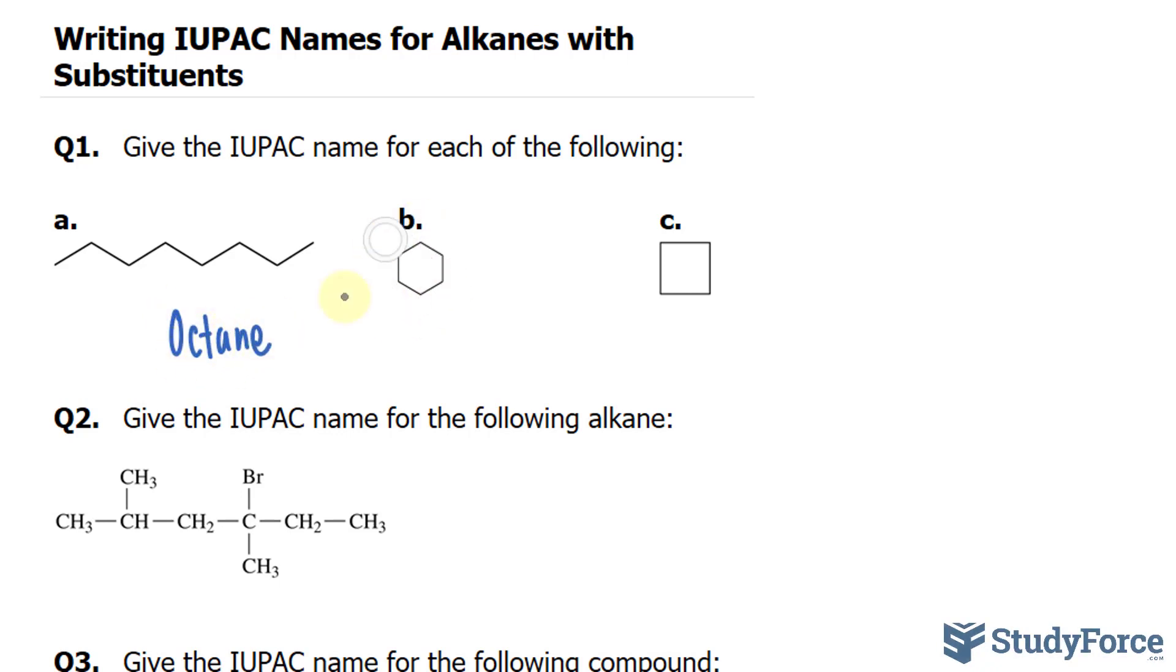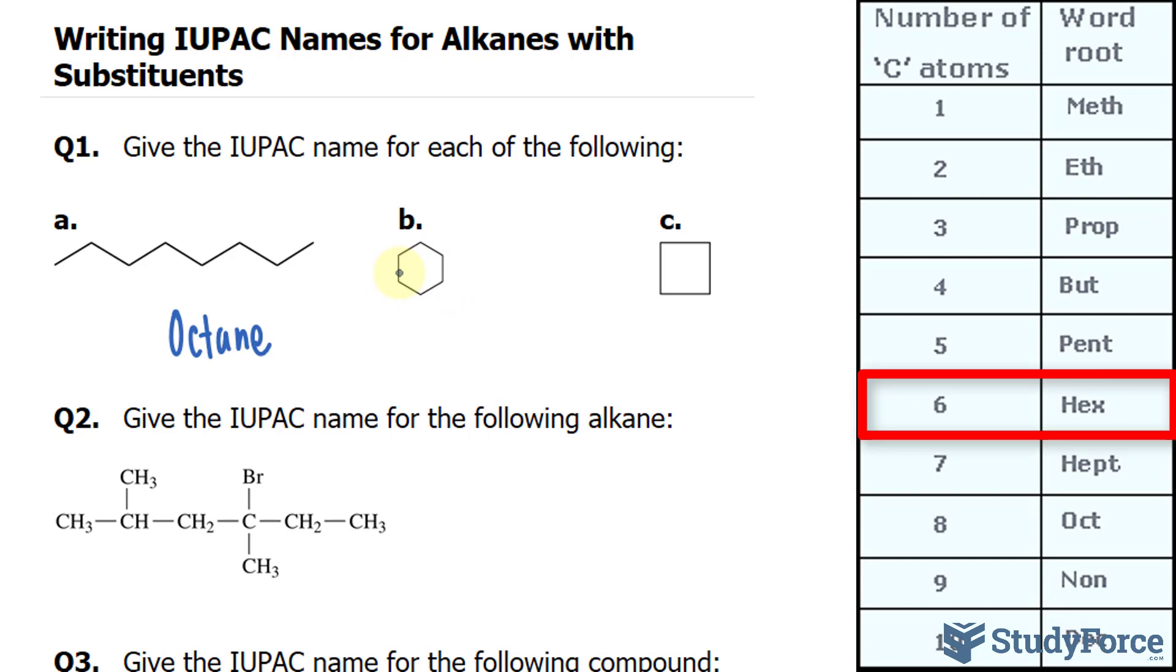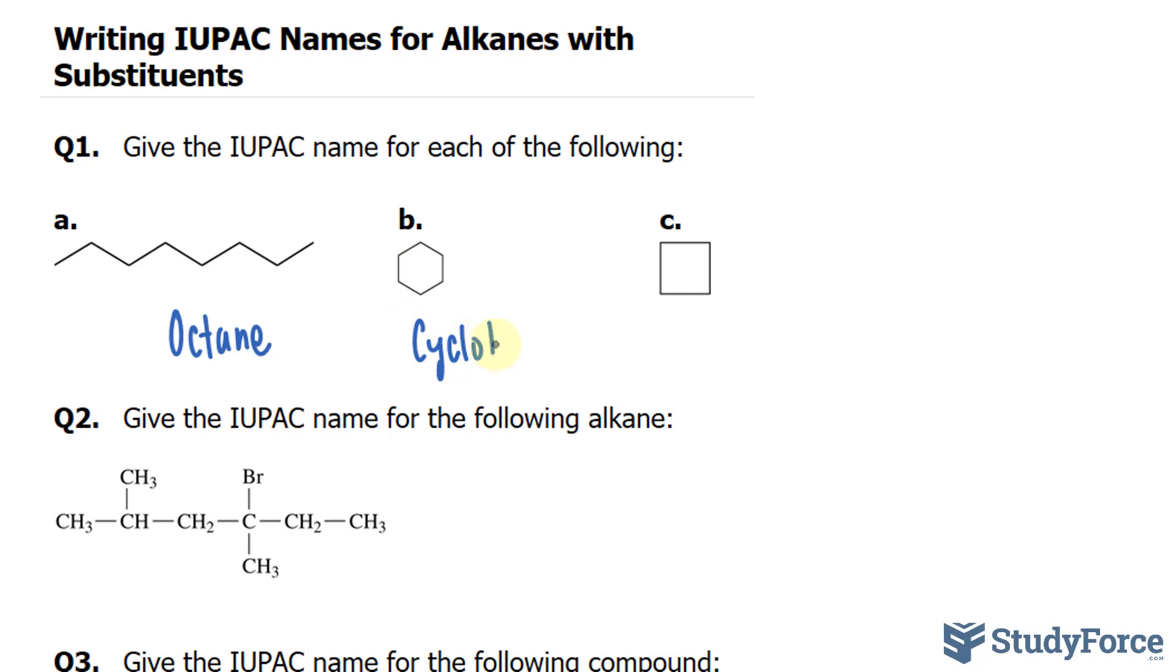In question B, we have a cyclical structure. Whenever you see a cyclical structure, you put in the prefix cyclo, and then the rest of the name. So we have 1, 2, 3, 4, 5, 6—6 carbons. That gets the prefix hex, so we have cyclohexane.